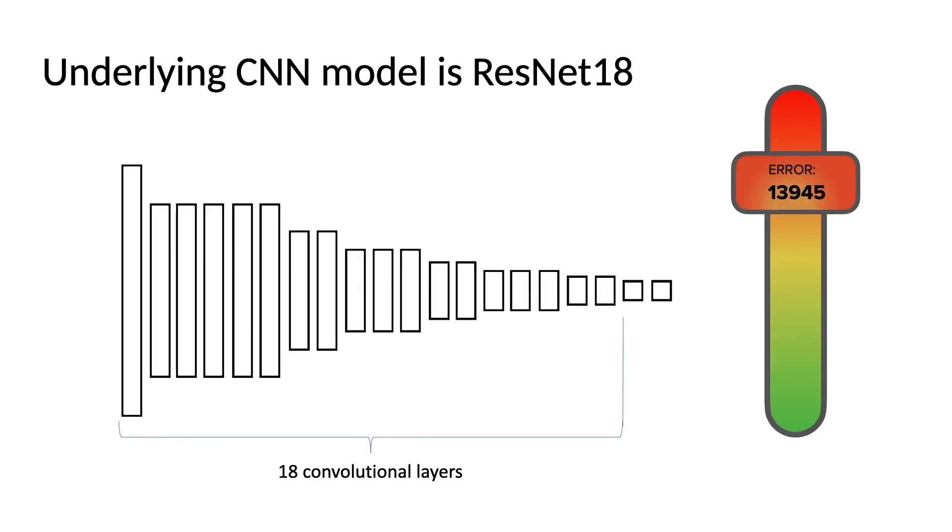For our particular CNN, we chose a ResNet-18 model, which is popular in image recognition tasks. The 18 refers to the 18 convolutional layers. The last two layers here are one by one, so they are not counted towards a convolution. This model got an NLL score of 13,945.